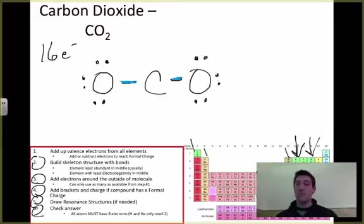So I must not be done because this carbon is not happy. Now sometimes people try to add more electrons, but you can't. You only have sixteen electrons to build this whole thing. This is where double bonds come in.